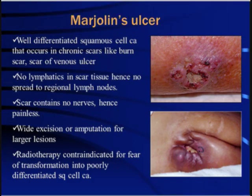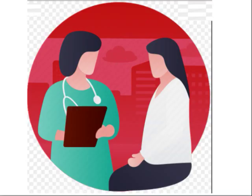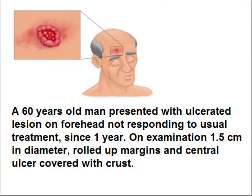Now the common form of squamous cell carcinoma — the clinical presentation: A 60-year-old male presented with an ulcerated lesion on the forehead, not responding to oral treatment since 1 year. On examination, it was 1.5 cm in diameter, with rolled-up margins and a central ulcer covered with crust. So skin biopsy was advised.